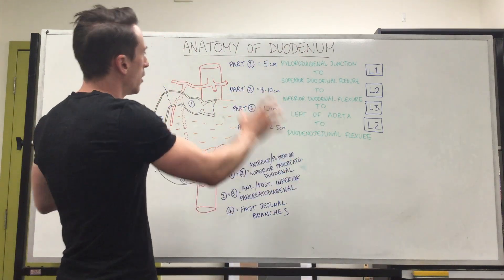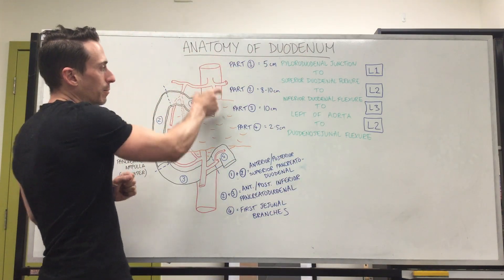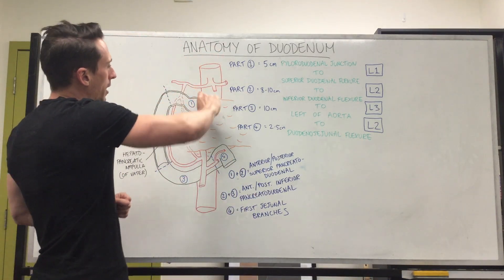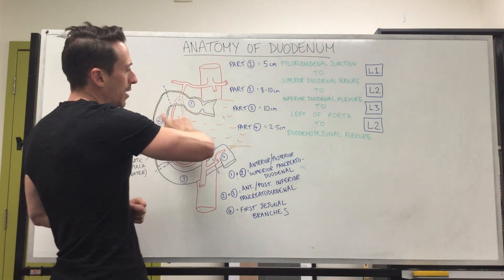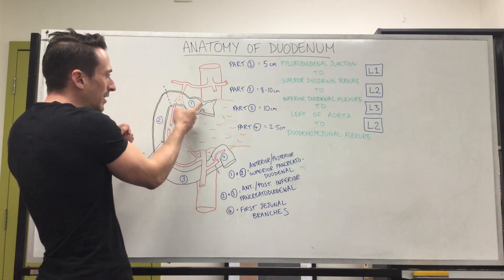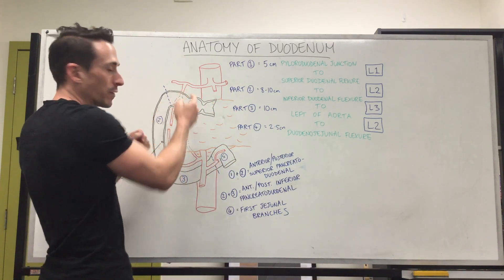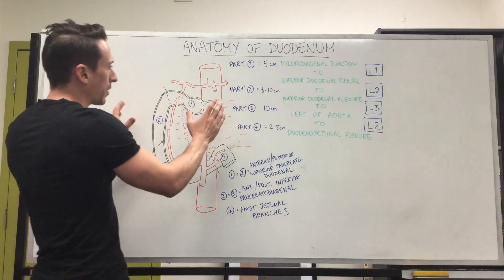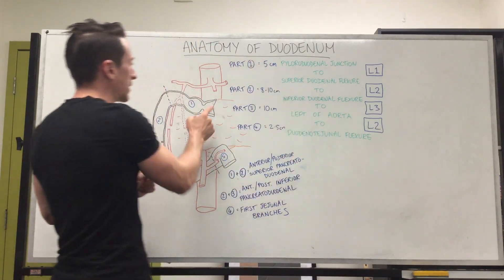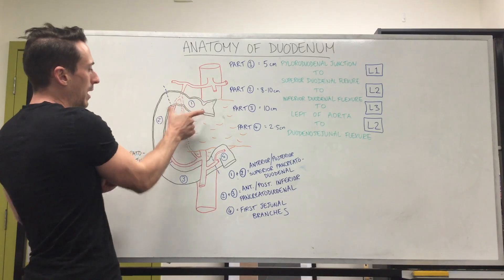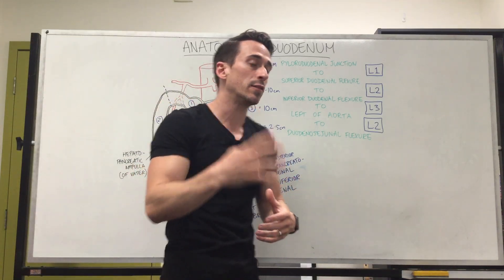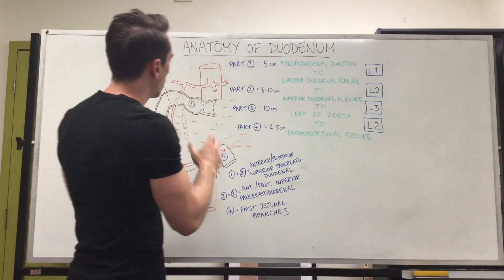If we take a look at what I've drawn up here, you can see the big aorta — the largest vessel in the body — running down behind the duodenum and also behind the pancreas, which sits inside this C-flexure of the duodenum. The duodenum can be broken up into four parts: the first, second, third, and fourth part.